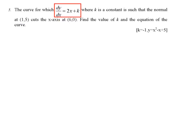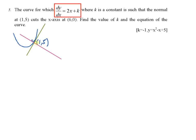To understand this, I want you to try to sketch it. Let's say this is the curve, with the point (1, 5) on it. First, we sketch the equation of the tangent — the tangent just touches this point. The equation of normal is perpendicular to the tangent, at 90 degrees. So this is the tangent, and this one is the normal. This normal is going to cut the x-axis at (6, 0). Let me draw the x-axis — they're going to cut the x-axis at this point here, (6, 0).